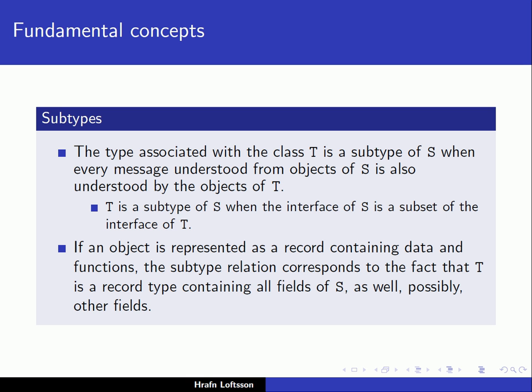So T is actually larger than S. That sounds a little contradictory because it's a subtype, but that's how this concept works in object-oriented languages. The subtype T is larger in the sense that it has all the functionality of S plus some additional functionality. So the record for T contains all the fields of S, but in addition possibly other fields.